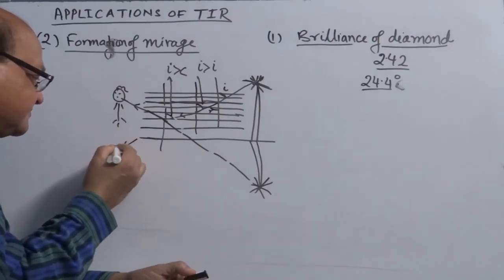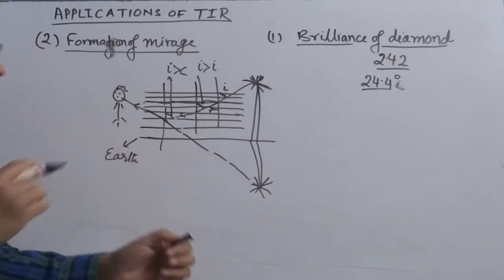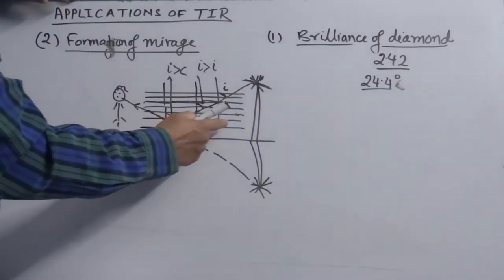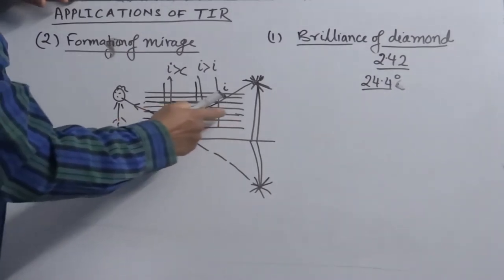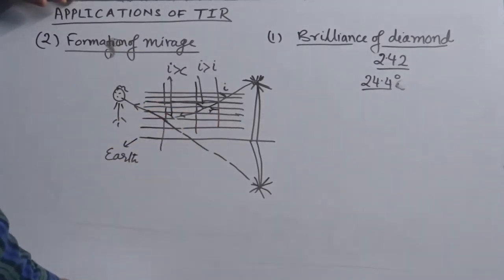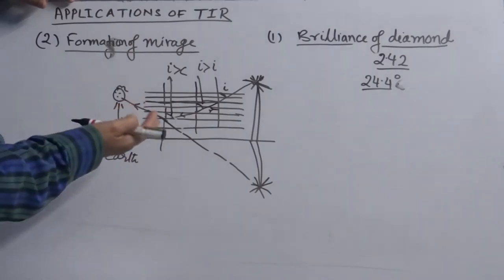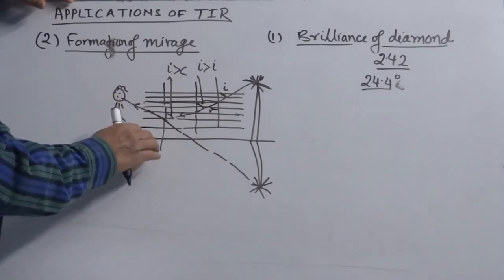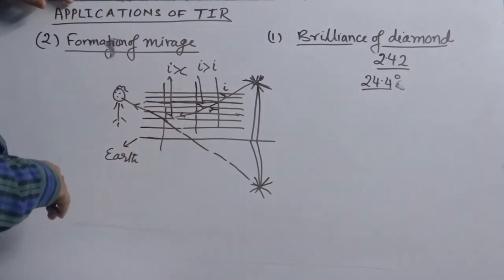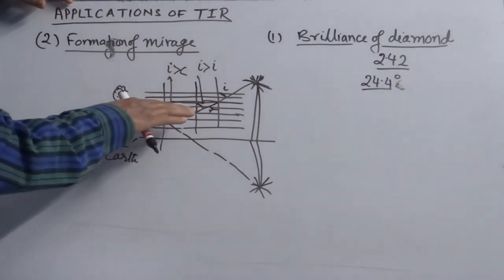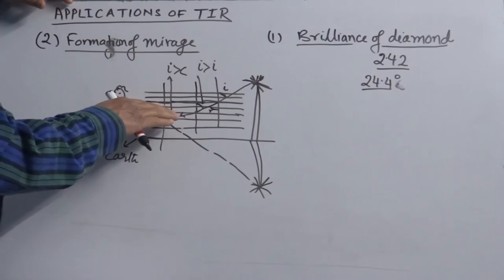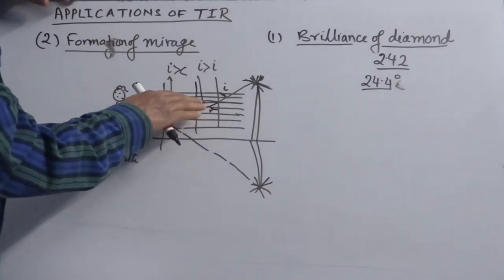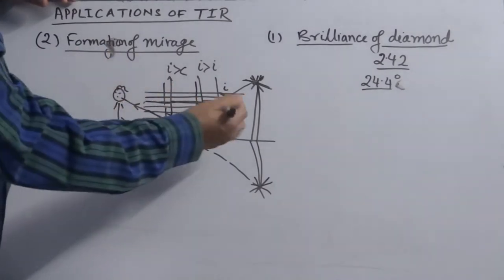Heat radiation reflected by the surface of the earth makes all the atmospheric layers in contact with the surface hotter. As a result, the air starts moving up, and the layers very close to the surface of the earth become rarefied, while the layers above are denser than these lower layers.